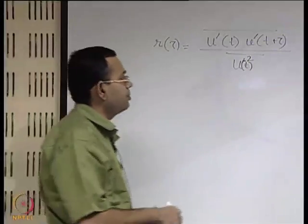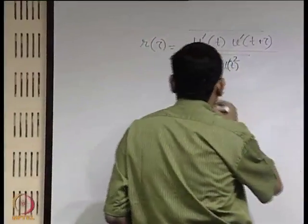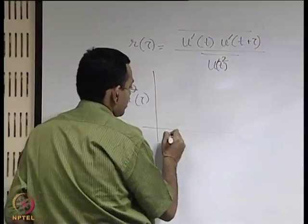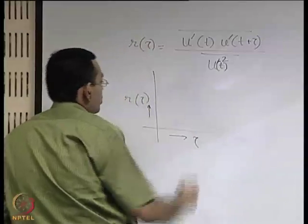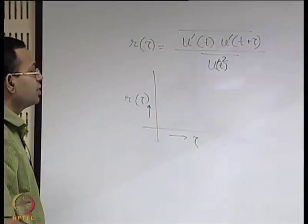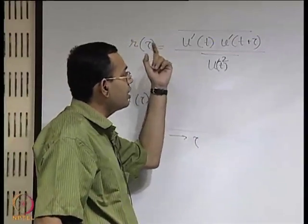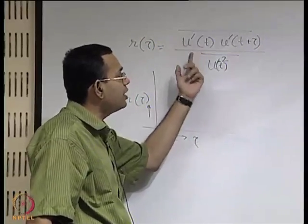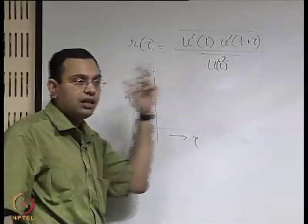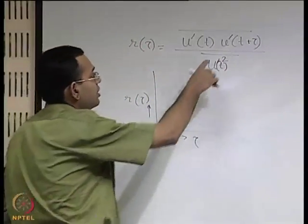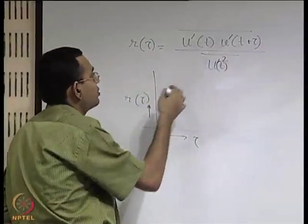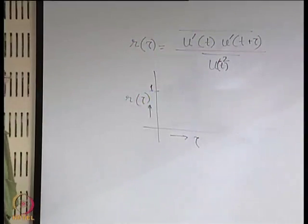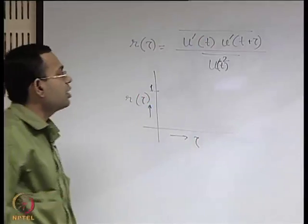If you have a plot of r(tau) versus tau, when tau is equal to 0, you see that you are talking about the correlation of the random variable u prime at time t with itself at time t. Therefore they are exactly the same, and it is clear from the expression that the correlation coefficient is 1. So this autocorrelation coefficient is 1 at tau equal to 0.